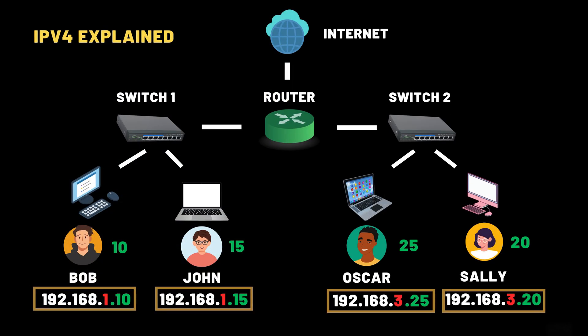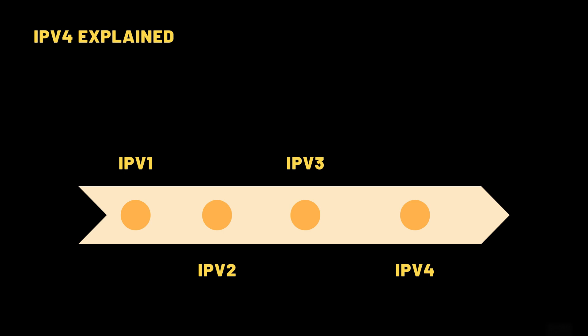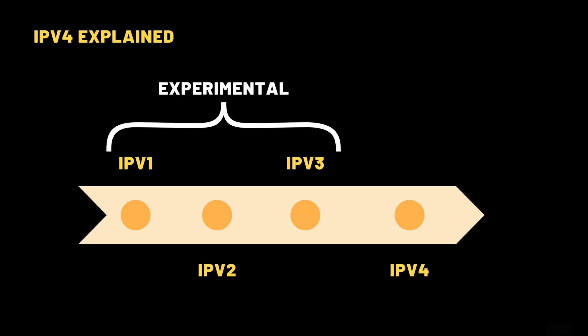The IP address we just saw is what's called an IPv4, short for Internet Protocol Version 4, and most networks today still rely on it. There were previous versions of the internet protocol — namely versions 1, 2, and 3 — but these were experimental and were never publicly deployed. IPv4 was the first version to gain broad adoption and became the foundation of the modern internet.